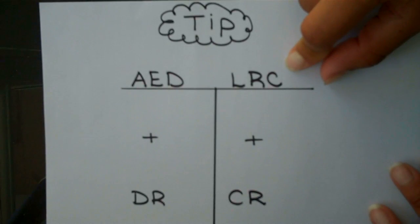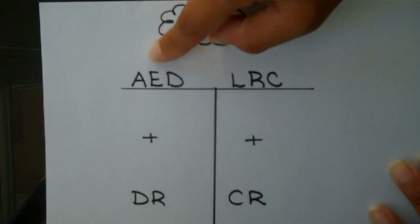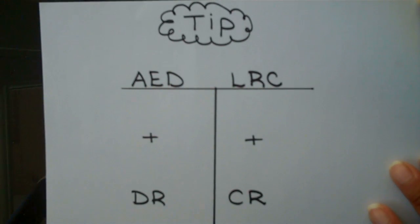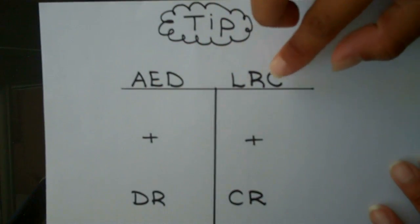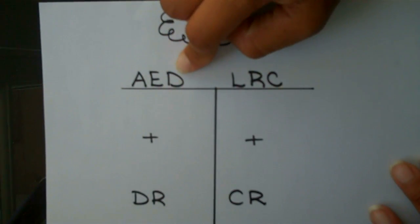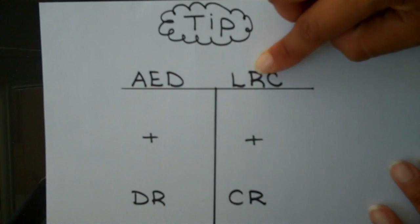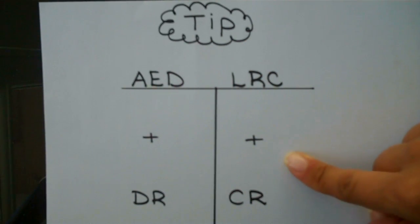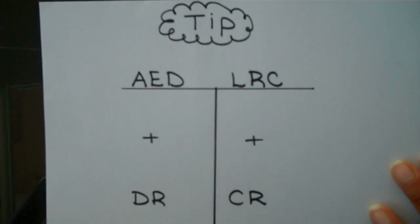That really only works if you remember the mnemonic. Some students wanted to say 'after eating dinner, let's have dessert,' but that doesn't work with this mnemonic. So it's 'after eating dinner, let's read comics,' and that stands for assets, expenses, dividends, liabilities, revenue, common stock — so that you can remember the normal balance, or the side that increases each one of these types of accounts.